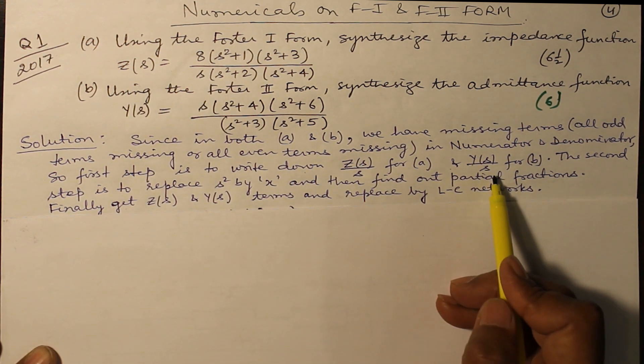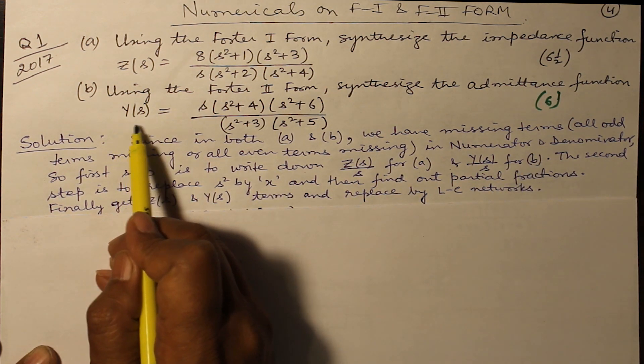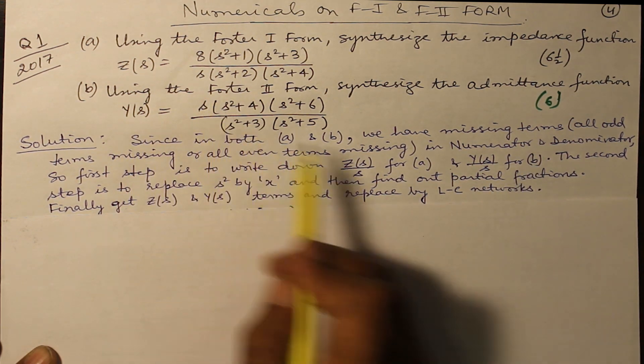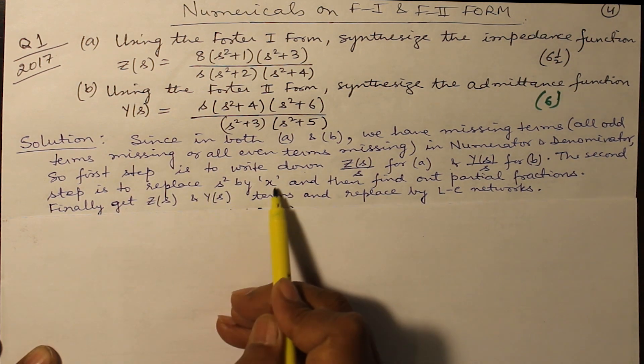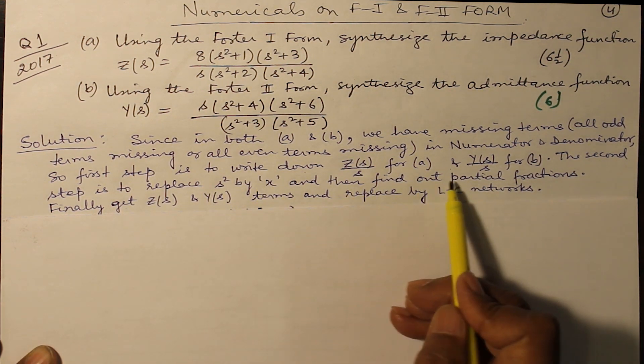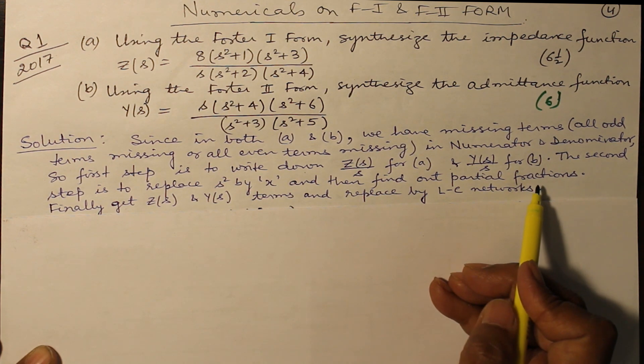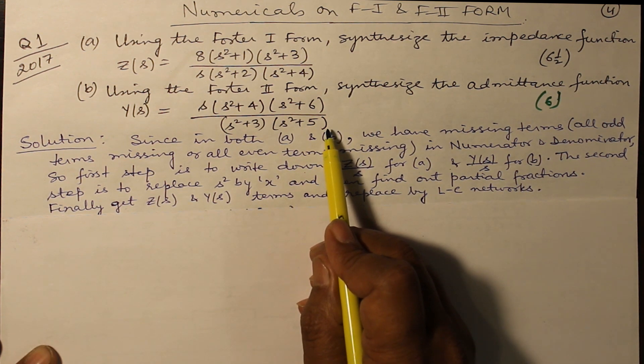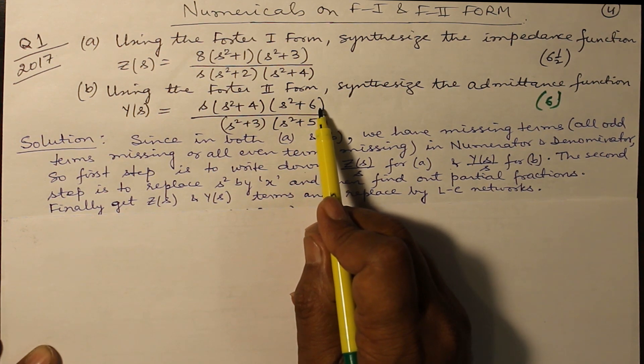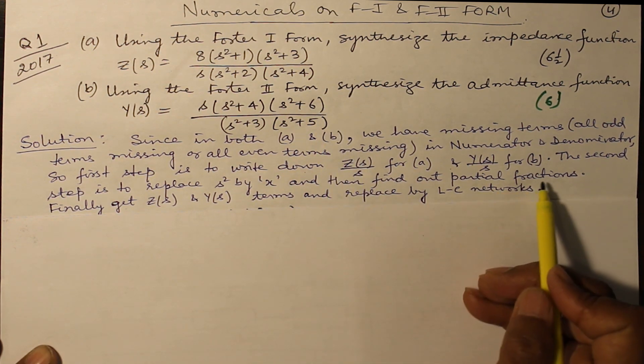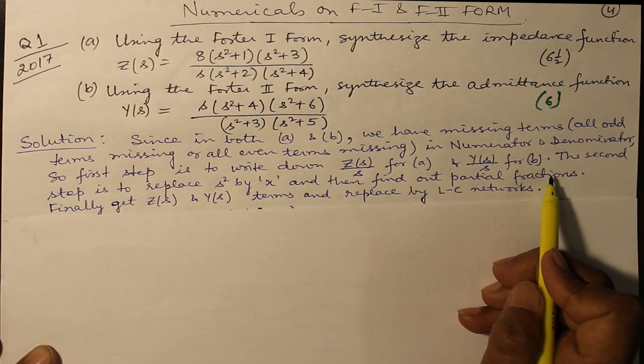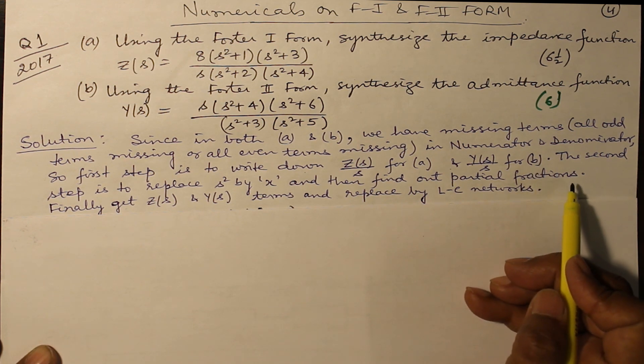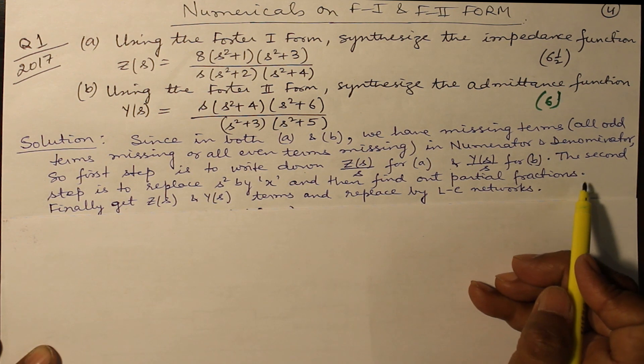The second step is to replace s² by x, and then try to find out the partial fraction. How do you find out partial fraction? If the power of the denominator is greater than the power of the numerator, then only you can use partial fraction. Otherwise, you will first divide it, get the power high in the denominator, and then resolve it into partial fractions.